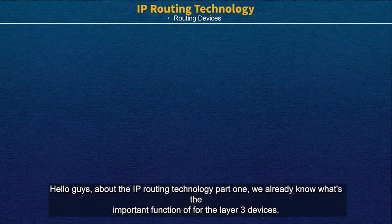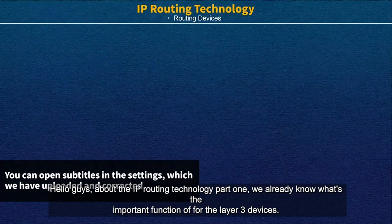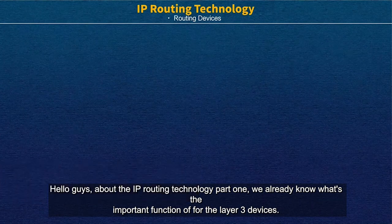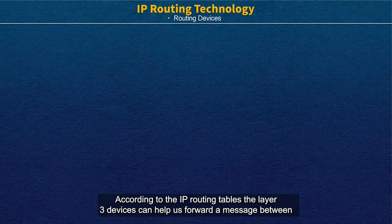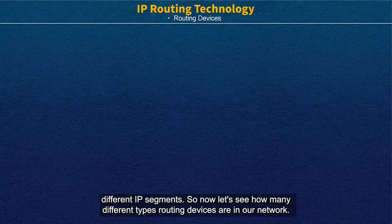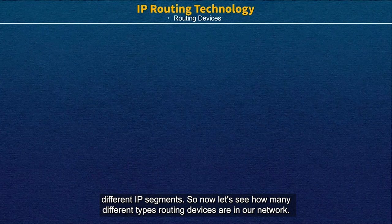Hello guys. About the IP routing technology part 1, we already know what the important functions of these three devices are. According to the IP routing table, these three devices can help us forward messages between different IP segments. So now let's see how many different types of routing devices exist in our network.